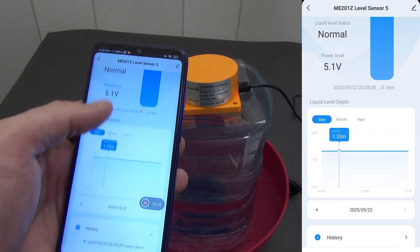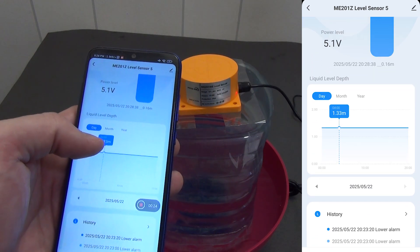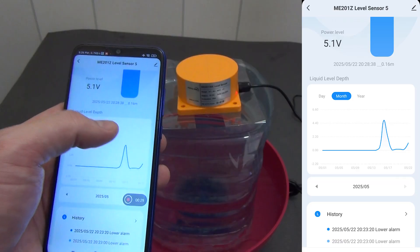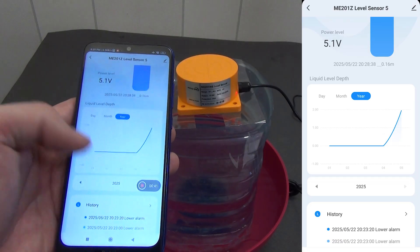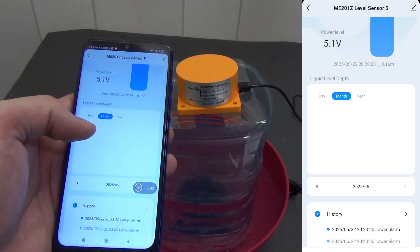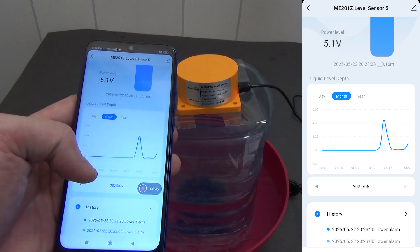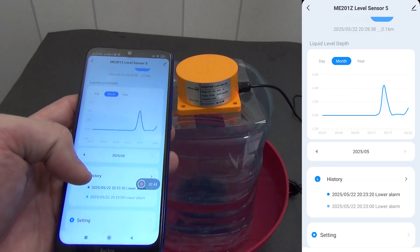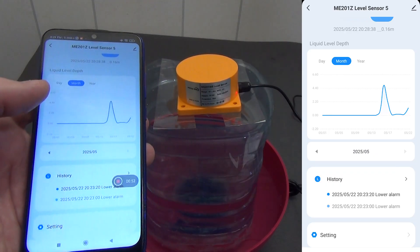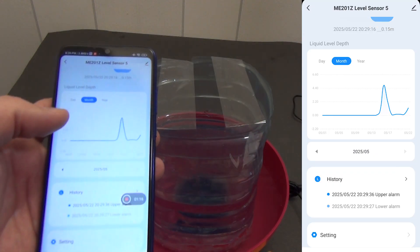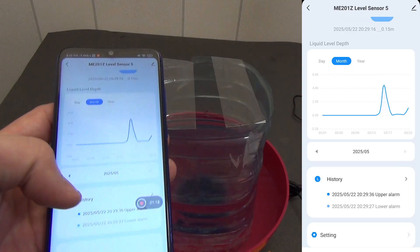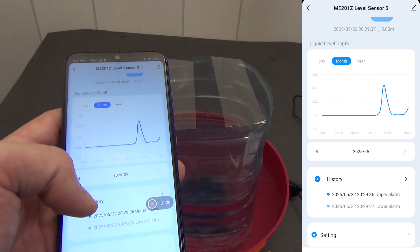Below we see a graph of the filling of the tank in the context of day, month and year. Let's say we switch today and see that here in a few hours the liquid column has dropped. It is convenient to analyze the consumption and filling of your tank. There is also a history of triggering configurable alarms. Here we see that there was an alarm about a low liquid level and then about a high level. All these parameters are configured in the settings.